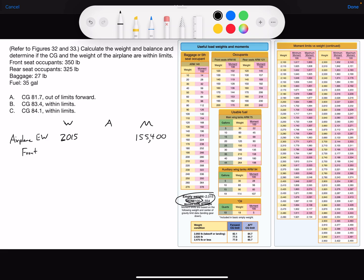In the front seat, we have front seats, 350 pounds. Rear, 325. Baggage, 27 pounds.